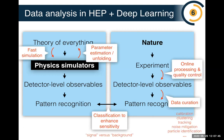Deep learning is starting to have a huge impact on all aspects of this chain — from online processing and data quality control, to noise mitigation and calibration. It's also playing a role in parameter estimation, accelerating or augmenting simulators, and the classical use of machine learning: using classifiers to enhance sensitivity to a particular signal we're searching for.